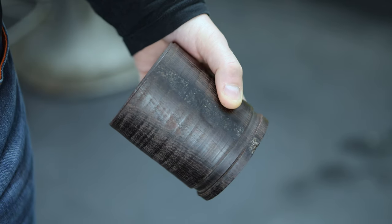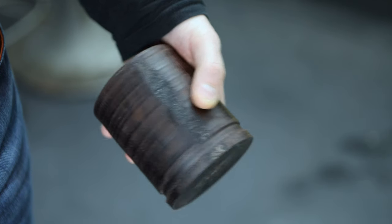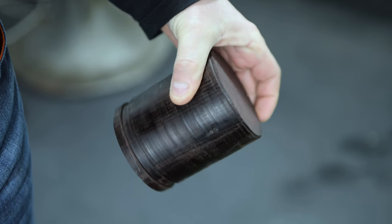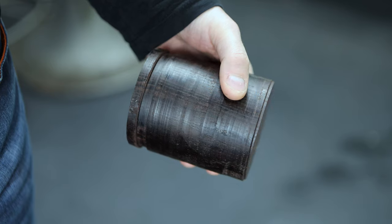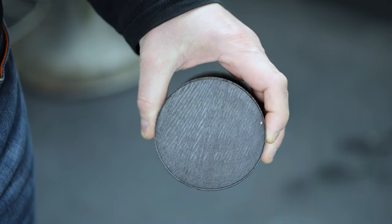This is African Blackwood. It grows in the dry savannah regions of central and southern Africa and can be considered to be the original ebony, having been imported and used in ancient Egypt thousands of years ago.